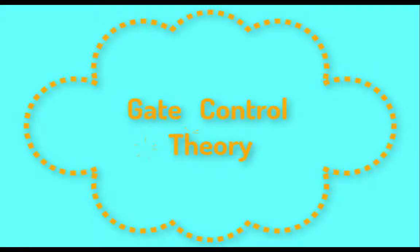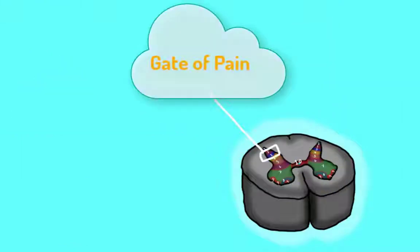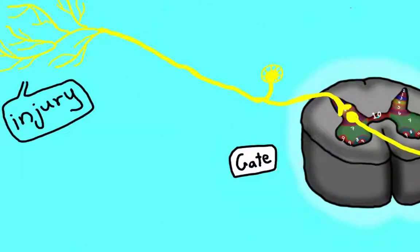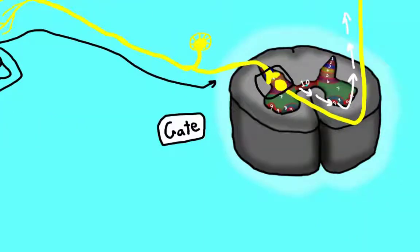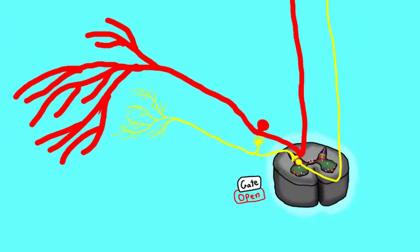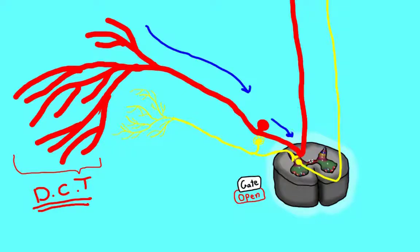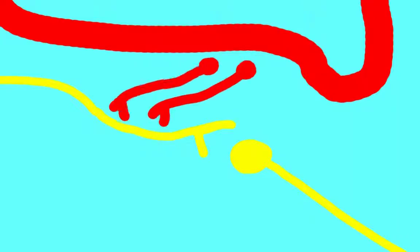Ronald Melzack and Wall proposed the gate control theory. They said that the substantia gelatinosa is the gate of pain, and to feel pain, signals must pass through the substantia gelatinosa — we say the gate is open. The dorsal column tract, with its thick rapidly propagating fibers, when stimulated, inhibits and sometimes blocks pain signal transmission. Interneurons connect the dorsal column tract fibers with the pain fibers. When the dorsal column tract is stimulated, it activates these interneurons which release GABA as an inhibitory neurotransmitter, causing presynaptic inhibition — blocking the release of substance P from the pain afferents, and resulting in stopping the transmission of pain signals.